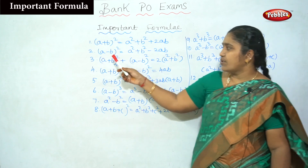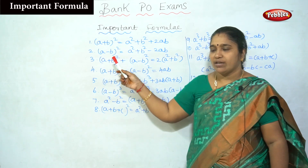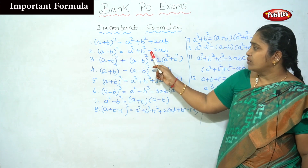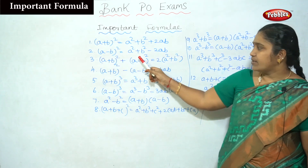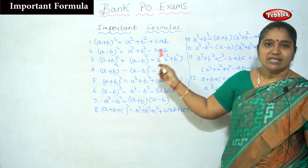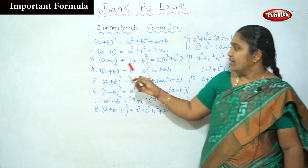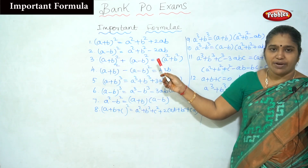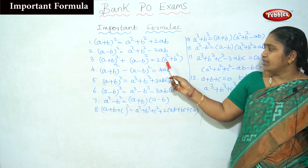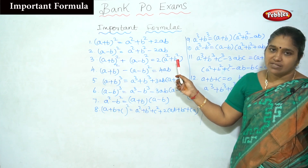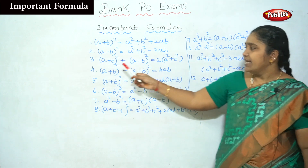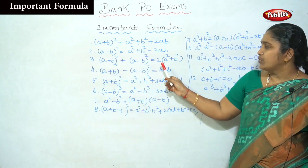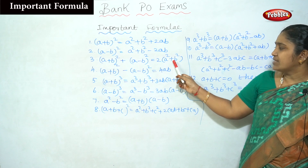The next one is (a - b) whole squared. Since there is a minus symbol, the formula is (a - b)² = a² + b² - 2ab. Then, (a + b)² + (a - b)² = 2(a² + b²).